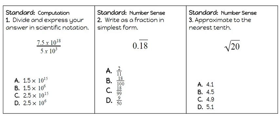Today's warm-up, number one, divide and express your answer in scientific notation. We're going to focus on the coefficients here of 7.5 and 5, and we're going to treat those like regular numbers. So 7.5 divided by 5 will give us 1.5.